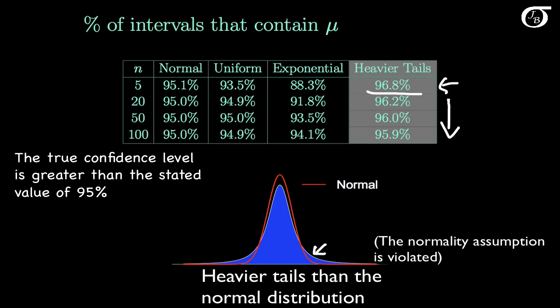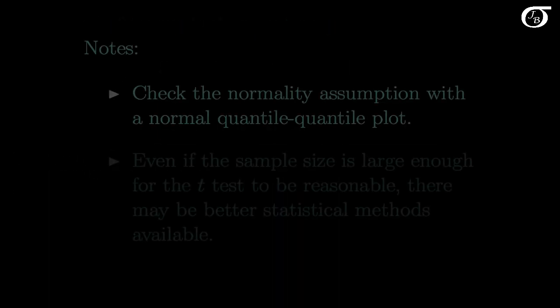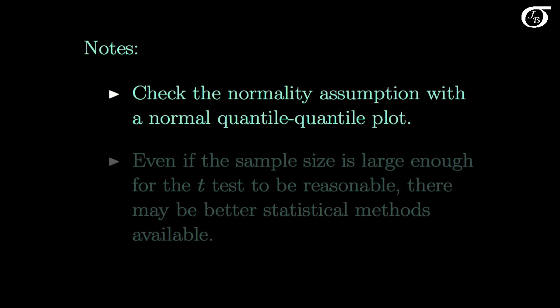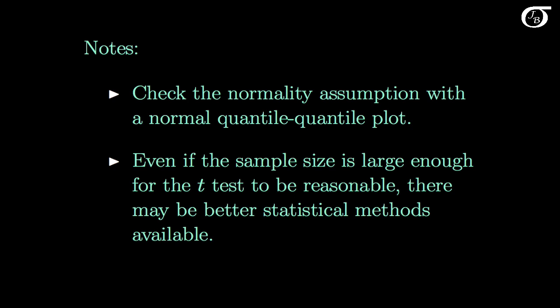To sum up, when we are sampling from a distribution that is not normal and we are using the t procedures, the true confidence level of our interval might be quite different from the one we are stating. This effect is especially problematic if we have some skewness, and especially problematic for small sample sizes. I suggest checking the normality assumption with a normal quantile-quantile plot rather than a formal test of normality. And even if the sample size is large enough for the t-procedure to be reasonable, there may be better statistical methods available — for example, if we are sampling from an exponential distribution, we should use inference procedures based on the exponential distribution rather than relying on large sample approximations of the t-procedures.